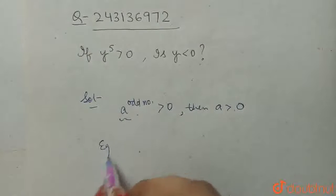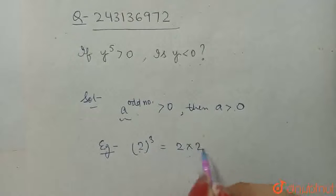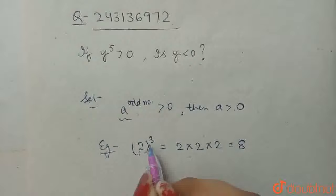Suppose, for an example, 2 raised to power 3 is 2 into 2 into 2, that is 8. That is, a positive number raised to the power of an odd number is always positive.